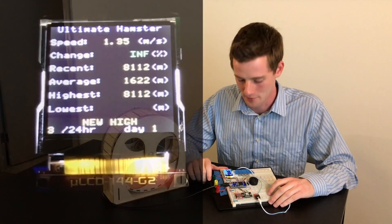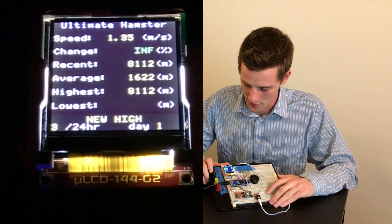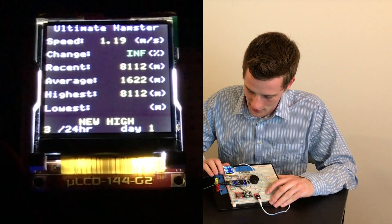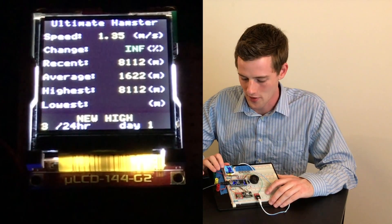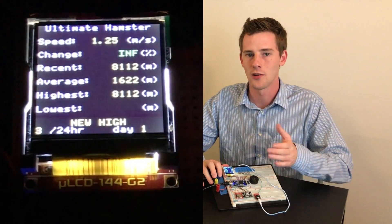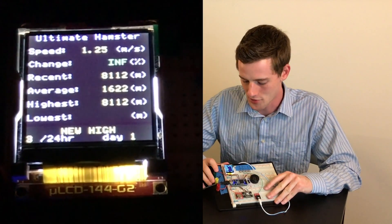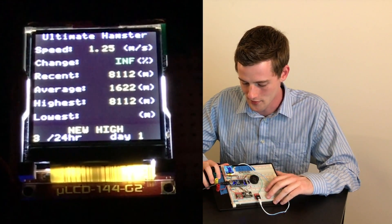Let's take a closer look at this display. The speed will update in real time. Everything else will update in a 24 hour block. So every 24 hours it will record the number of revolutions and convert that into a distance, which is called recent.